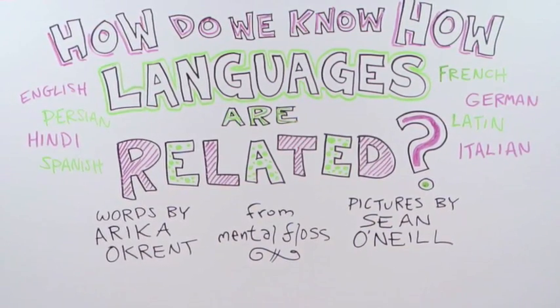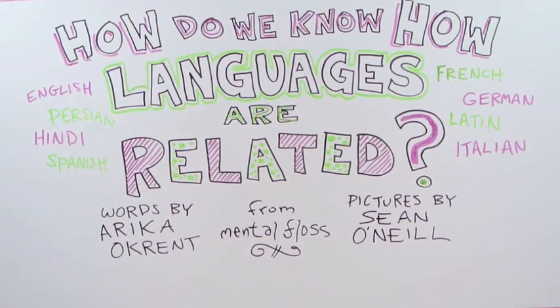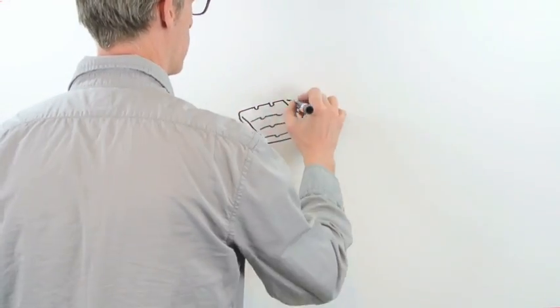How do we know how languages are related? When two languages share some things in common, they might be related, but they also might not be. How do we know?